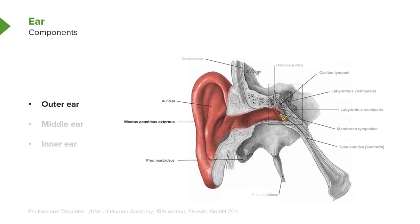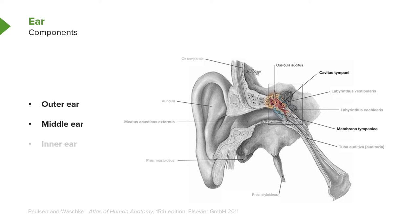Those sound waves will strike the tympanic membrane, or eardrum. The middle ear is shown through here. It is characterized by the presence of three very tiny ear ossicles. The middle ear will connect to the pharynx through the pharyngotympanic tube that we see here.